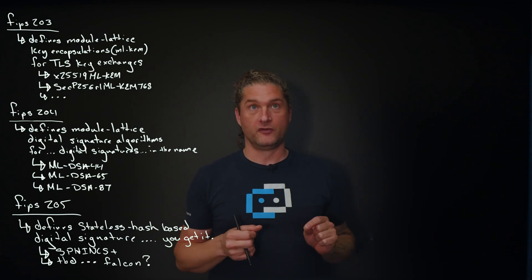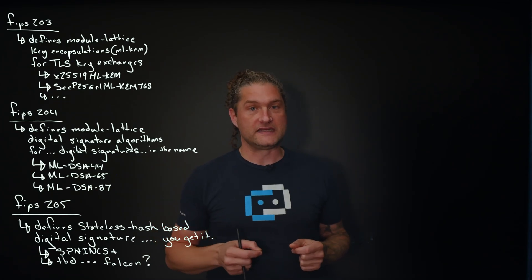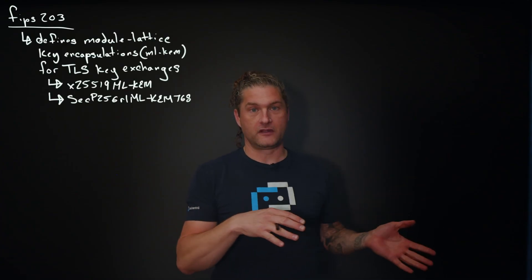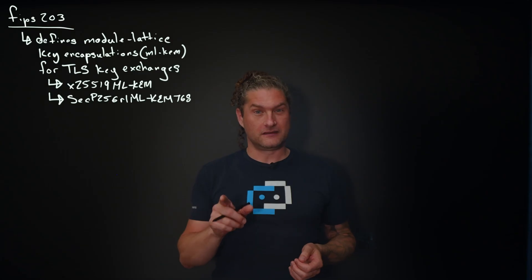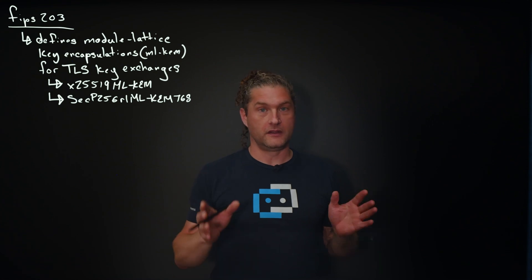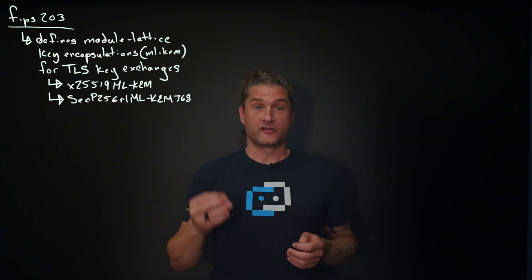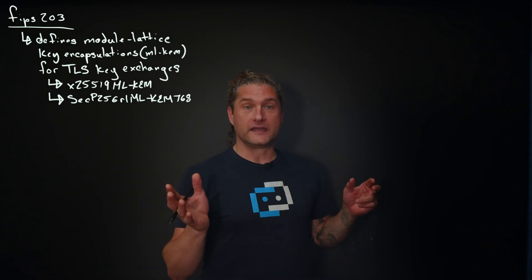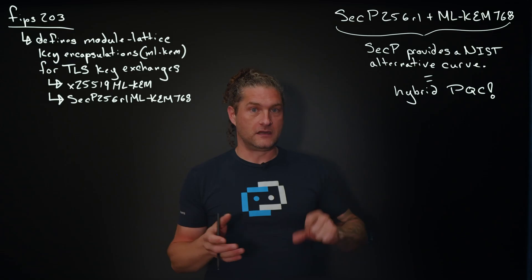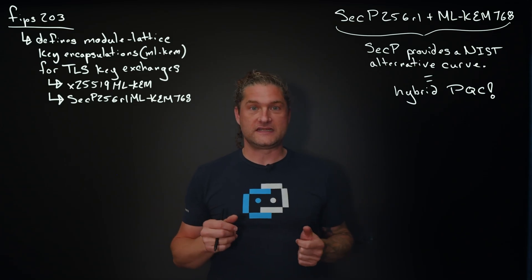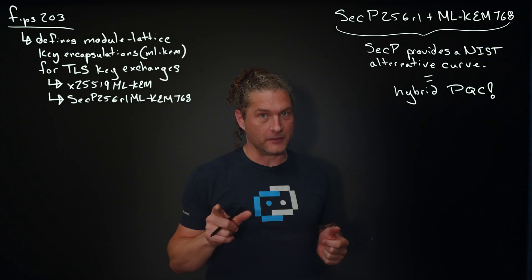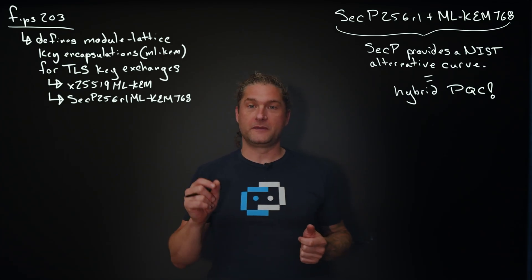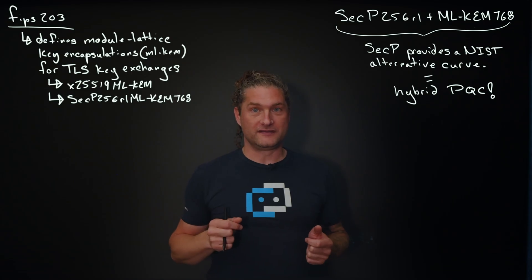Those three standards, standardized by NIST through four rounds, were chosen by the NSA as the top variants for their CNSA 2.0 implementation. ML-KEM combines classical elliptic curve X25519 with a post-quantum key exchange scheme — Kyber-768 or Kyber-1024 depending on the required security level — for quantum-resistant TLS. For example, combining secp256 with ML-KEM-768 creates a hybrid, which is why we say hybrid post-quantum cryptography. The combined output of those two algorithms creates the session key used to encrypt the TLS connection.